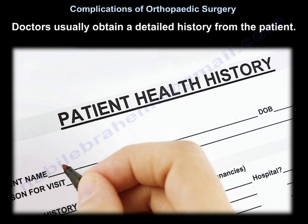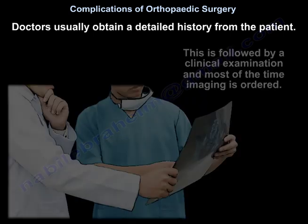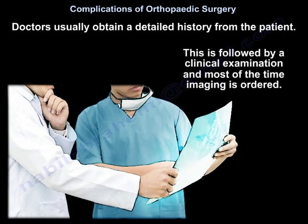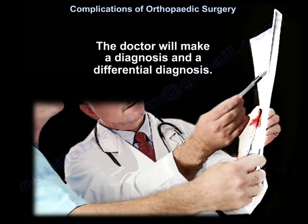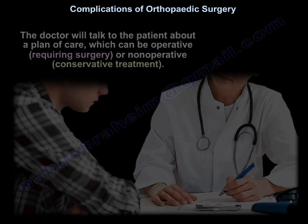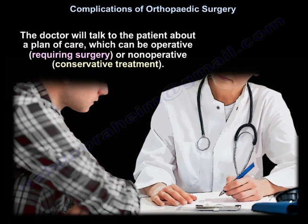Doctors usually obtain a detailed history from the patient, followed by a clinical examination. Most of the time, imaging is ordered. The doctor will make a diagnosis and a differential diagnosis, then talk to the patient about a plan of care, which can be operative, requiring surgery, or non-operative — called conservative treatment.